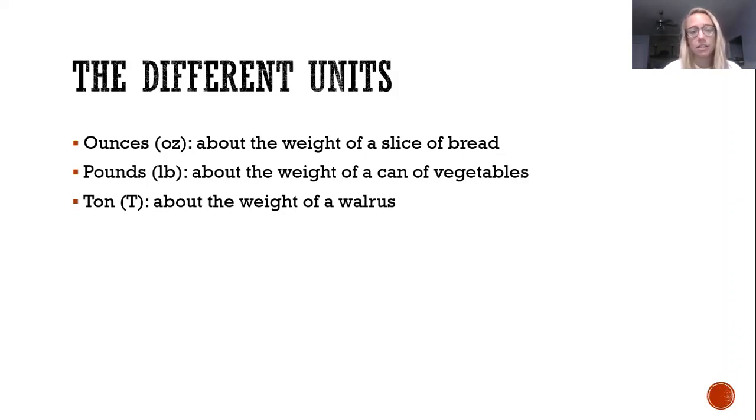If we are using the metric system, which is what the rest of the world uses, a gram is the smallest unit with abbreviation G, and that is about the weight of a paper clip. A kilogram, abbreviation kg, is the bigger unit and that is about two and a half pounds, so it's about the weight of two large apples.